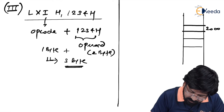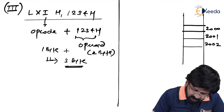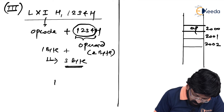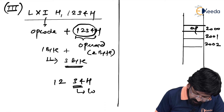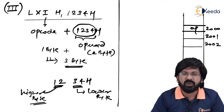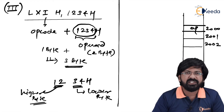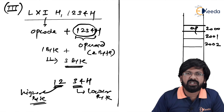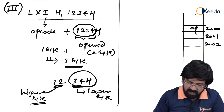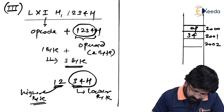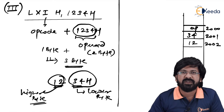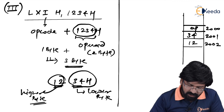Storing into memory: locations 2000H, 2001H, 2002H. Opcode goes in 2000H. The operand 1234H — 34H is the lower byte and 12H is the higher byte. Following the Little Endian rule, lower byte goes to lower address: 34H stored at 2001H, and 12H stored at 2002H. Step 1 is now complete. Step 2 begins — MUP fetches the instruction.